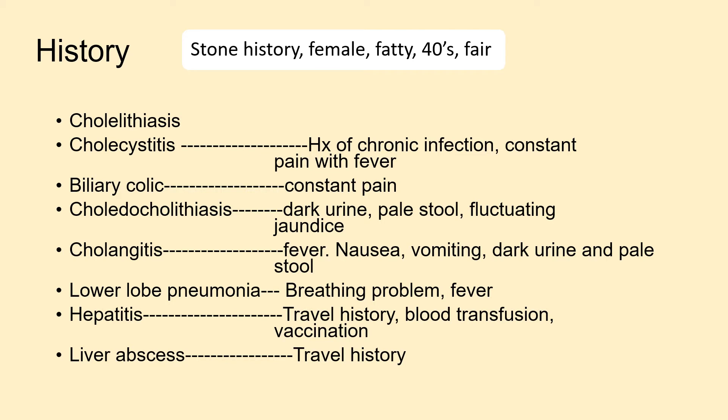In choledocholithiasis, there would be dark urine, pale stool, and fluctuating jaundice. These features would also be present in cholangitis, but in cholangitis there are additional symptoms of fever, nausea, and vomiting.